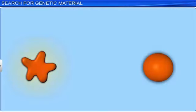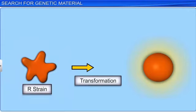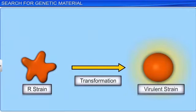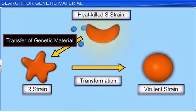He also concluded that the reason why the R strain bacteria produced a smooth polysaccharide coat and became lethal or virulent was because of the transfer of some genetic material from the heat-killed S strain bacteria. However, there was still no means to ascertain or identify the genetic material that was transferred and responsible for the transformation process.